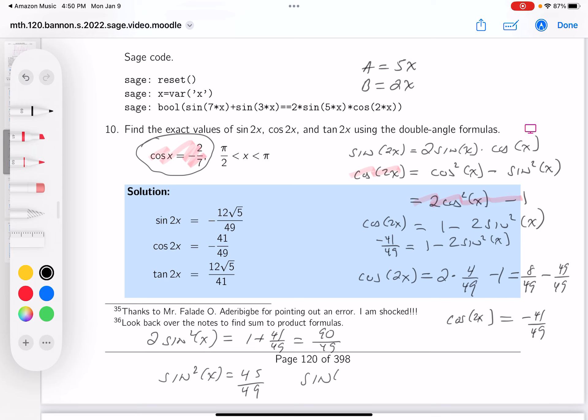So the sine of x could be equal to plus or minus the square root of 45 over 7. And it can't be both, though. So I got to look at the problem again. They tell me this, right? It's between pi over 2 and pi. So now I know the sine of x is going to be a positive number, which is root 45 over 7.